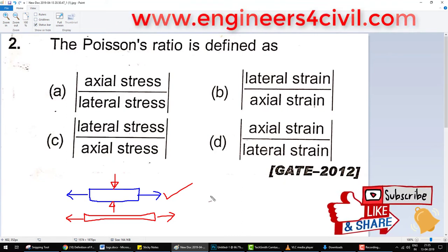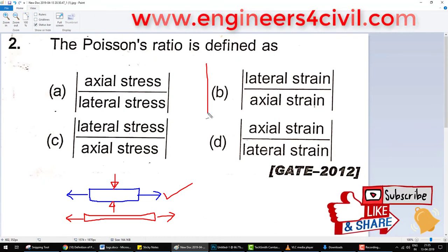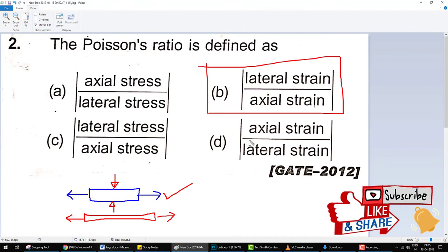As longitudinal strain is also known as axial strain, so hence the answer is B is correct. The Poisson ratio is defined as the lateral strain upon the axial strain.